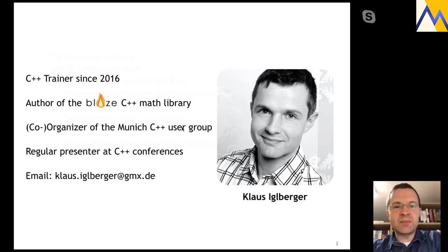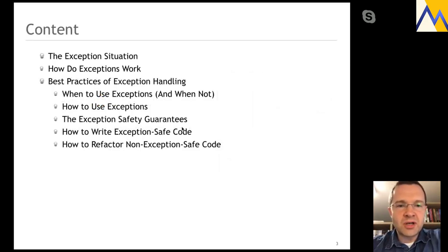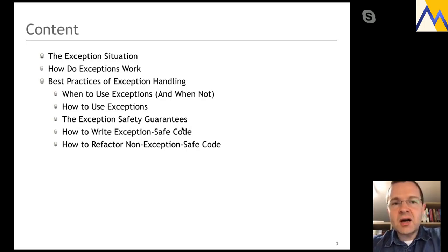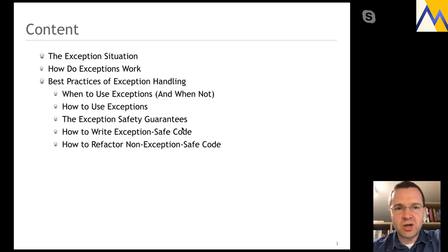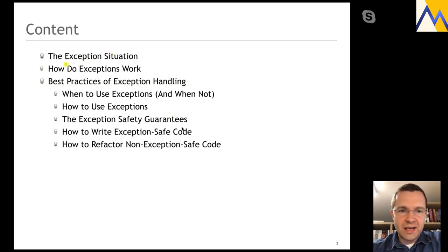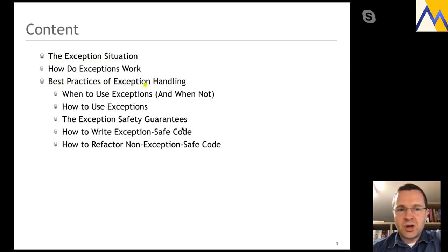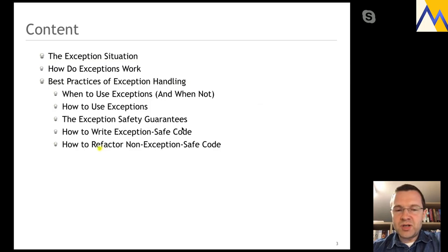Today's topic, as I said before, is exceptions. You might wonder why another talk about exceptions, because there are indeed a lot of talks on this particular topic. As the title suggests, this is not a particularly deep talk — it's a beginner-friendly talk. CppCon, since last year, has a special track called Back to Basics, which is supposed to provide valuable information to non-experts in C++. We'll talk about the exception situation, how exceptions work, best practices of exception handling — when to use exceptions and when not — exception safety guarantees, and how to write code that can probably deal with exceptions. I also have a couple of slides about refactoring.